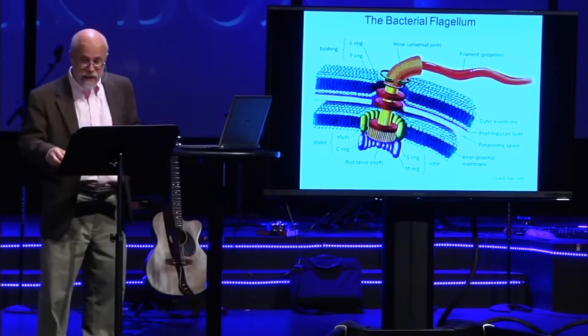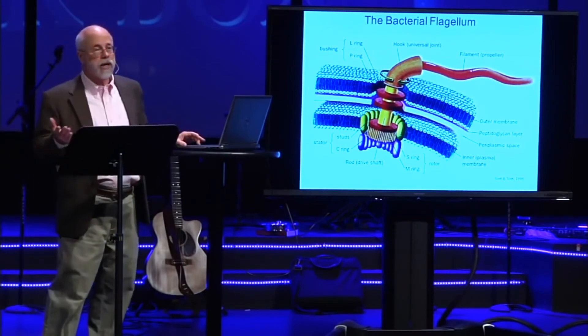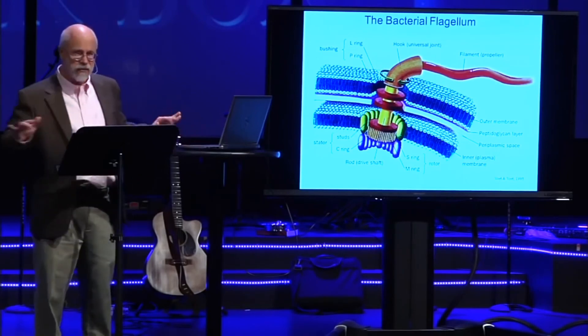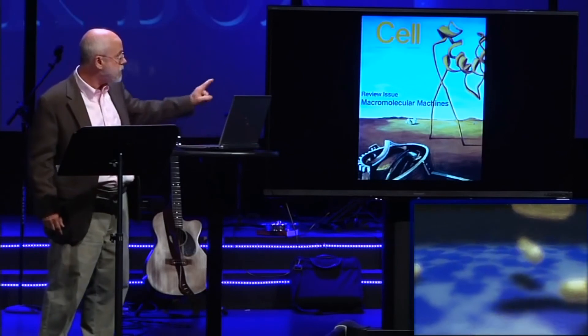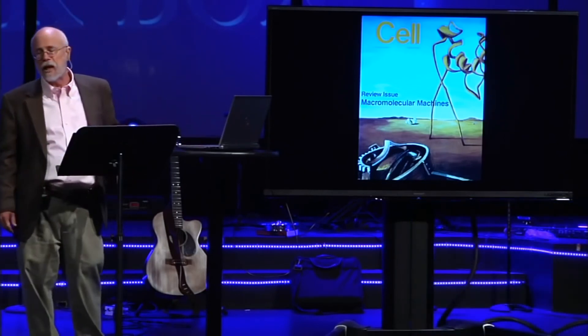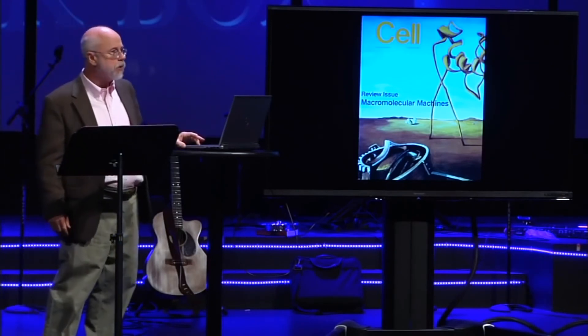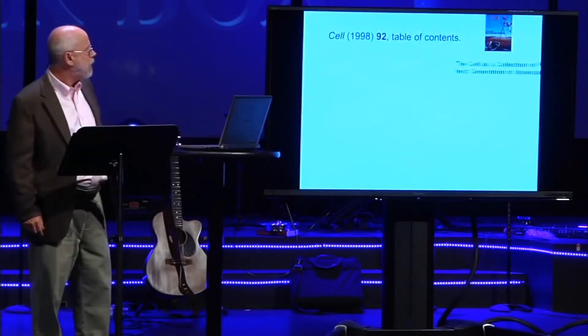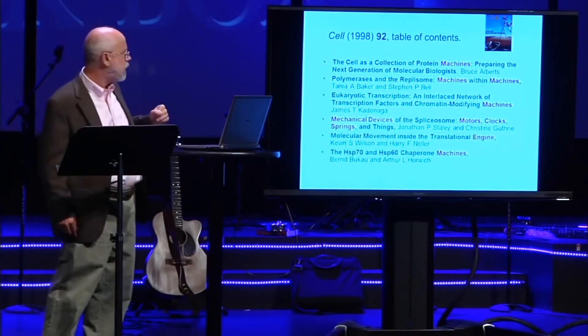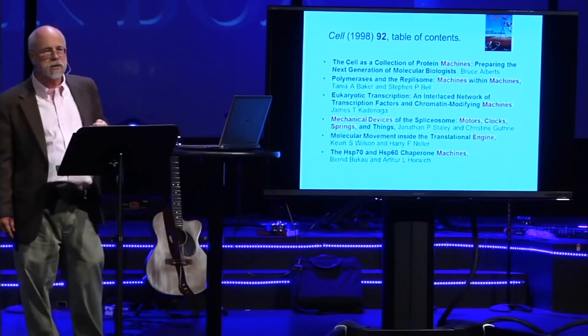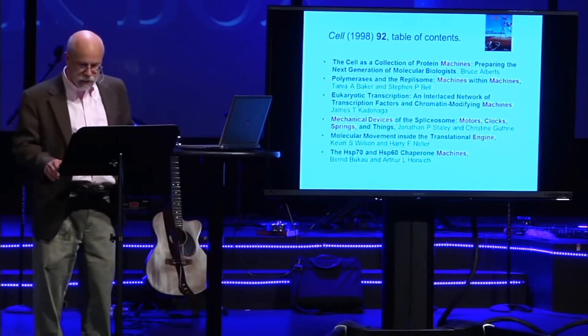The flagellum is therefore extremely difficult to explain in terms of Darwin's numerous successive slight modifications, and in fact nobody in science has explained how that could come about. Nor is this some freak of nature — things like this are everywhere at the cellular and molecular level of biology. Here's the cover of an issue of Cell, a journal for professional biologists, entitled 'Macromolecular Machines.' The table of contents lists articles such as 'The Cell Is a Collection of Protein Machines,' 'Polymerases in the Replisome: Machines within Machines,' and 'Mechanical Devices of the Spliceosome.' Machines like this are all over biology.